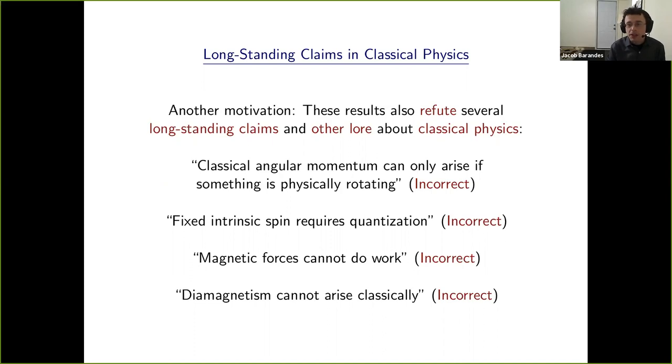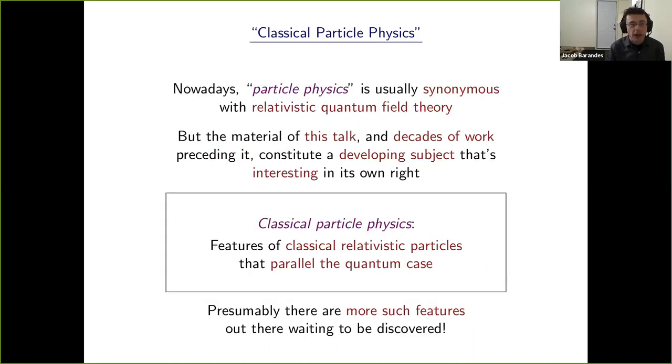There are other motivations, including refuting a number of claims and lore that one often hears about classical physics: that classical angular momentum doesn't make sense without something actually rotating; that even if it does, there's no notion of having fixed intrinsic spin without quantization; that magnetic forces cannot do work; and a famous result going back to Niels Bohr's PhD thesis that diamagnetism cannot arise classically. We'll see that all of these are incorrect.